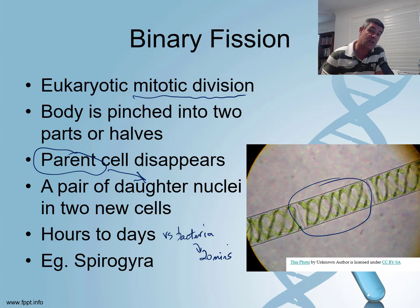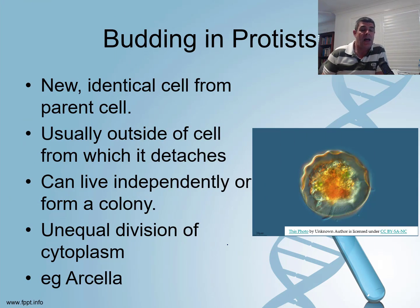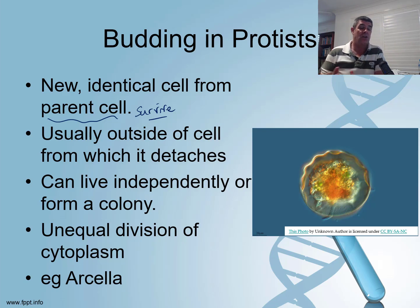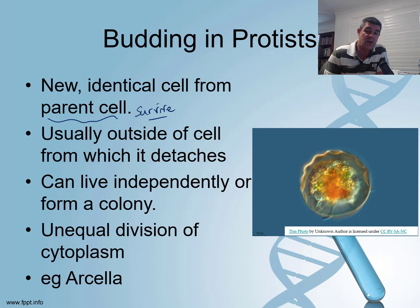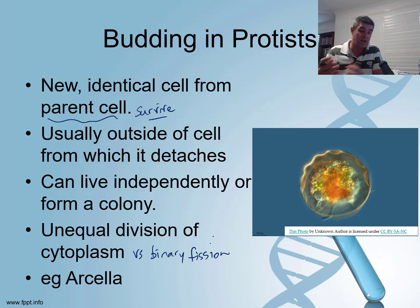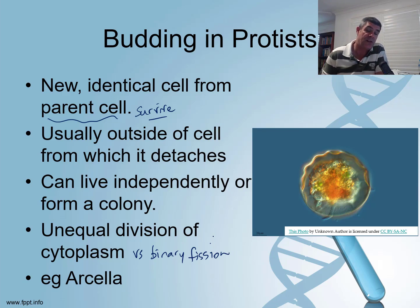There's a much higher incidence of binary fission among protists than budding, though budding does occur. In budding, a new identical cell is produced from the parent, but the parent continues to survive and may go through its life cycle and ultimately die. It's usually from the outside of the cell that the bud detaches, pinching off from the main cell. New cells produced through buds can live independently or form colonies, so we do find some colonial examples of protists. One key feature of budding is the unequal division of cytoplasm — only a small portion goes into the bud developing into the new individual. Amoeba is one example of a protist that undergoes budding.